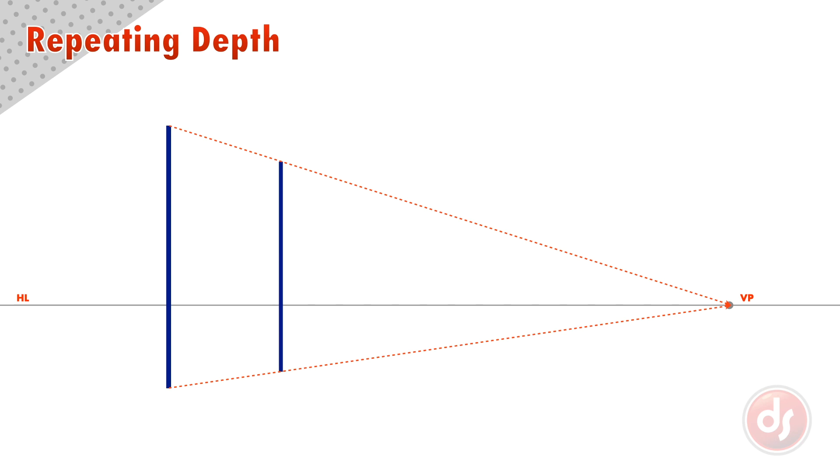You choose this initial distance, but now we can repeat the space between them accurately, accounting for the way they will get incrementally closer together as they move towards the horizon.